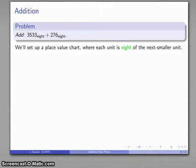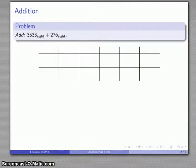I'll set up a place value chart. And because I'm working in base 8, each unit is going to be 8 of the next smaller unit. So I'll set up my place value chart with a bunch of columns. If I need more, I'll just add additional columns at the end.